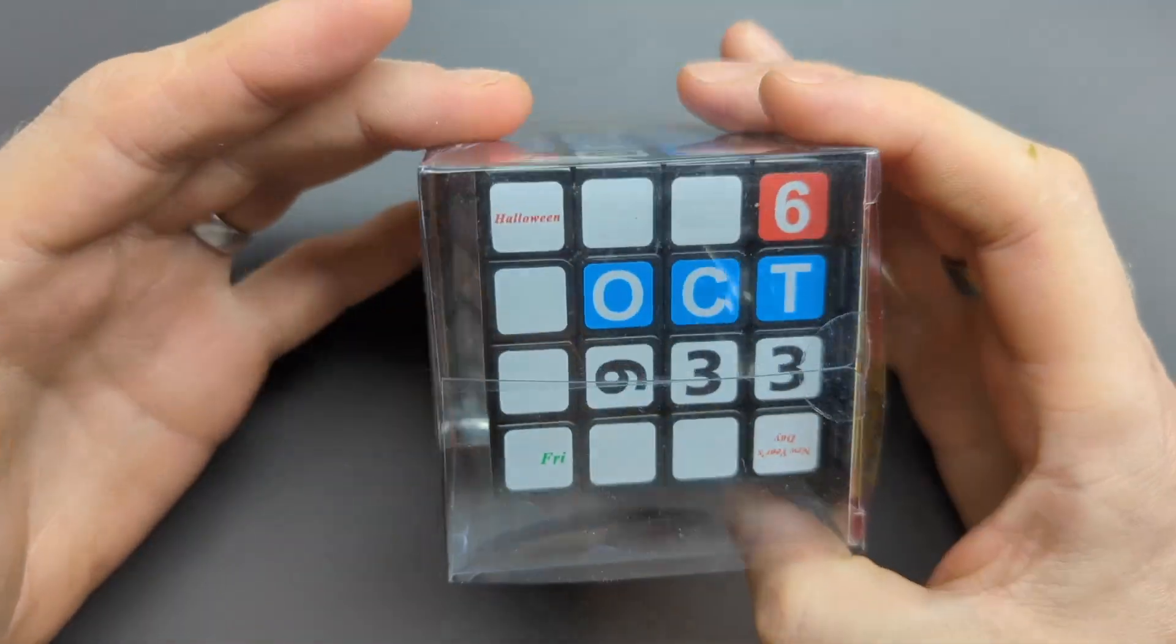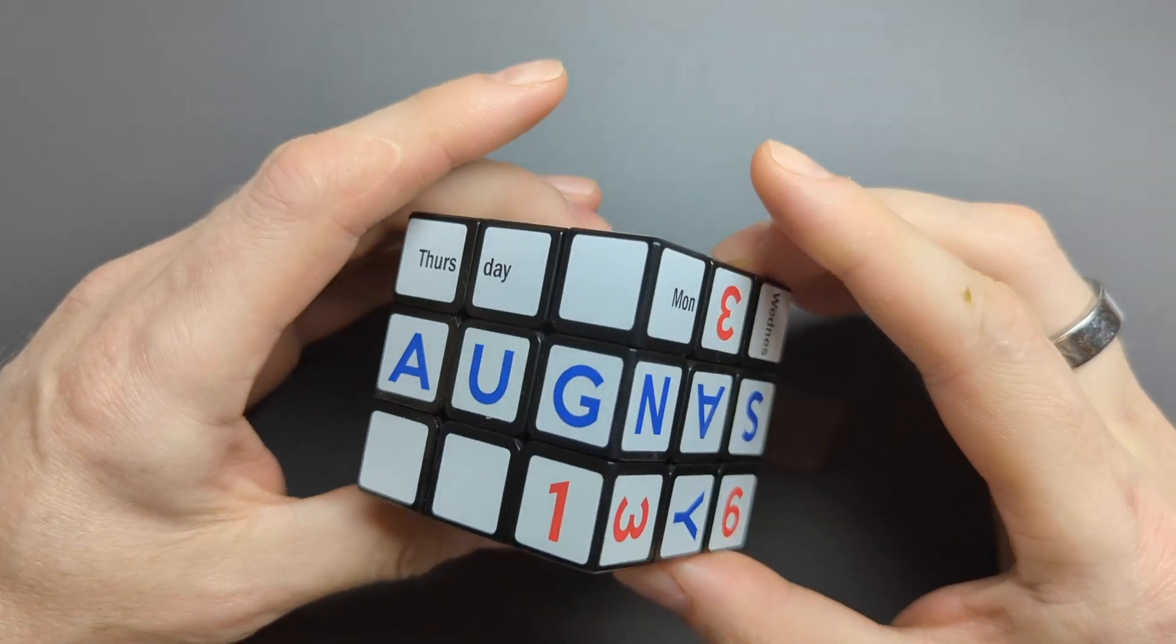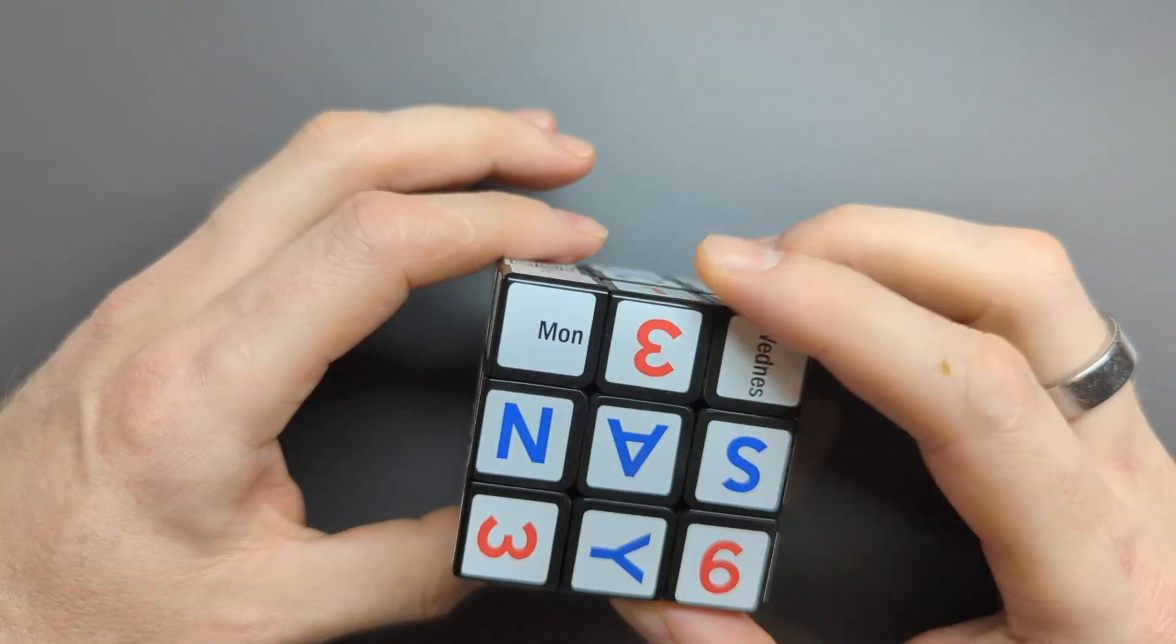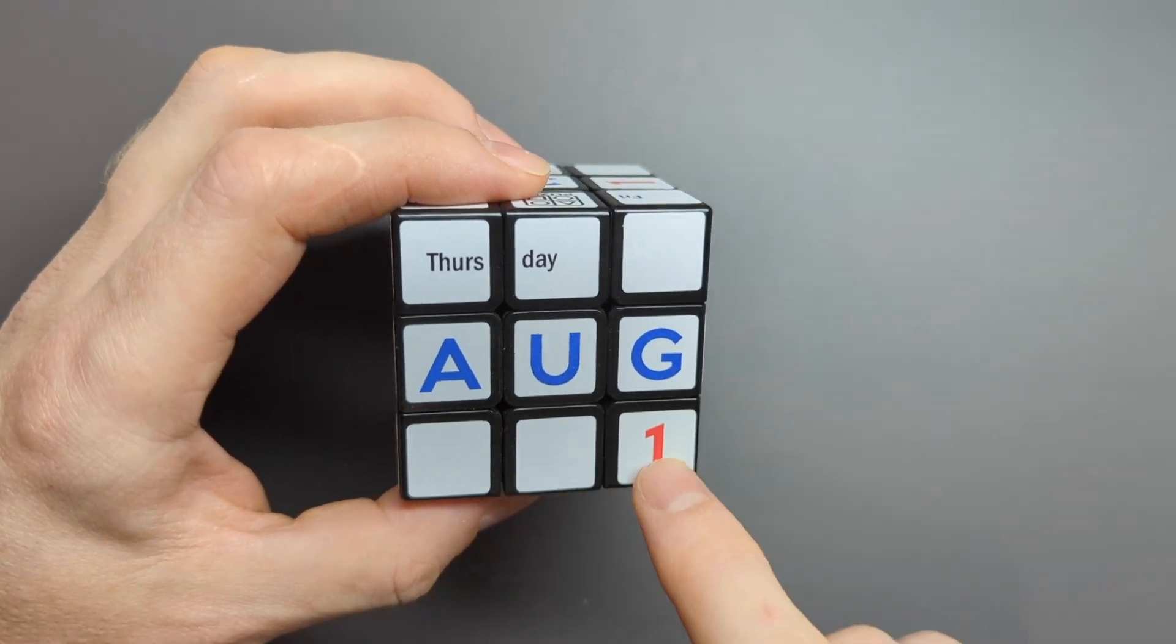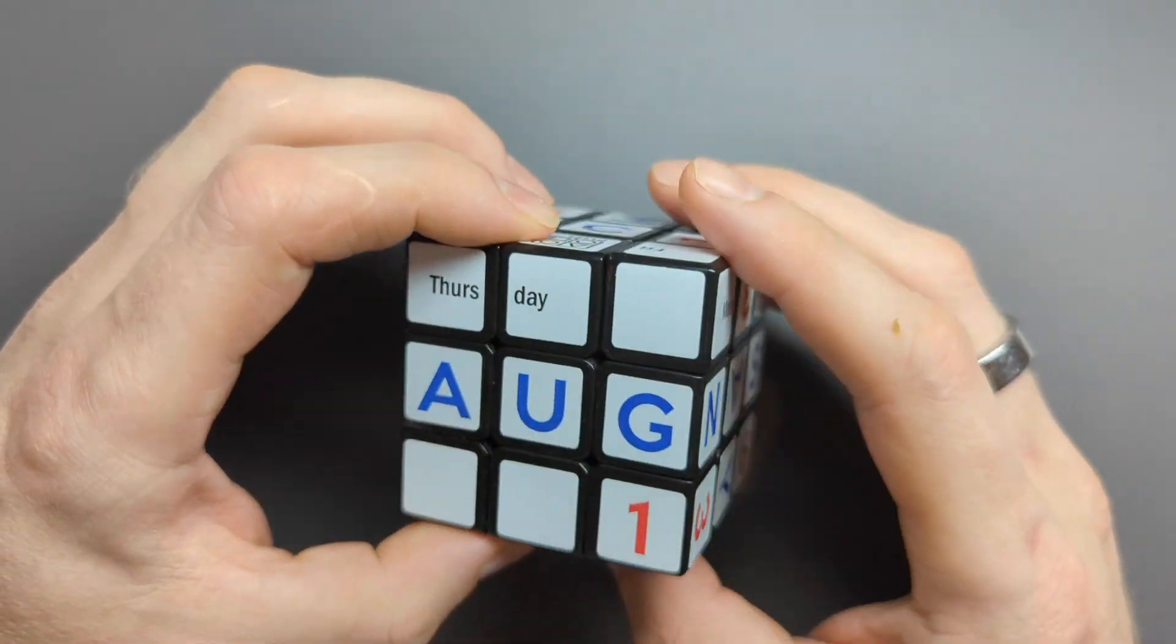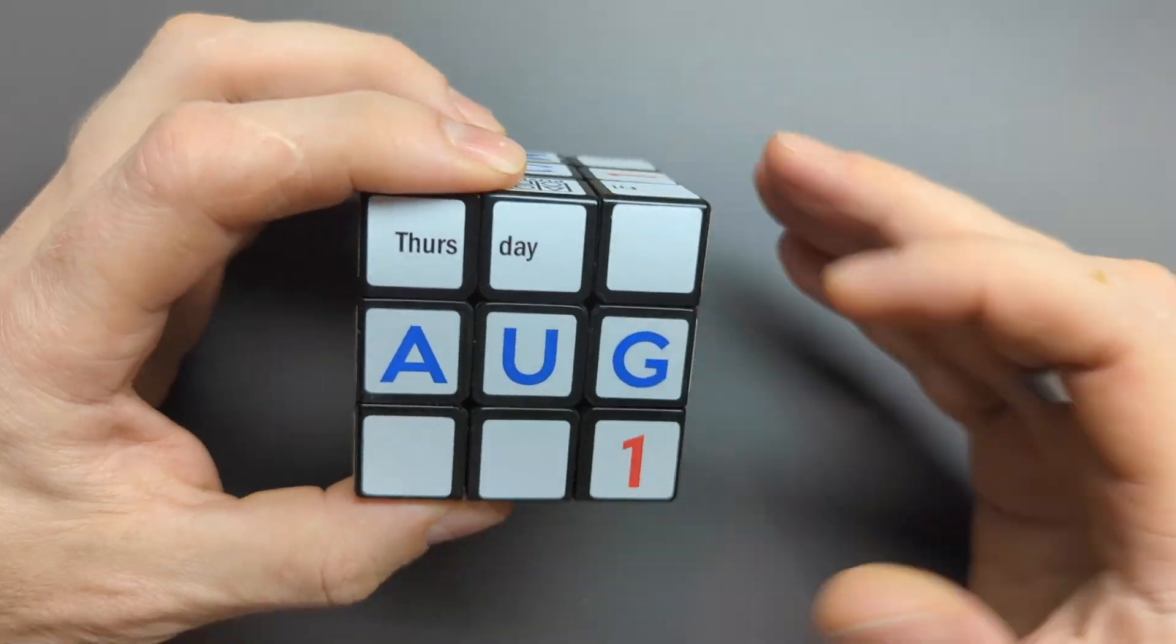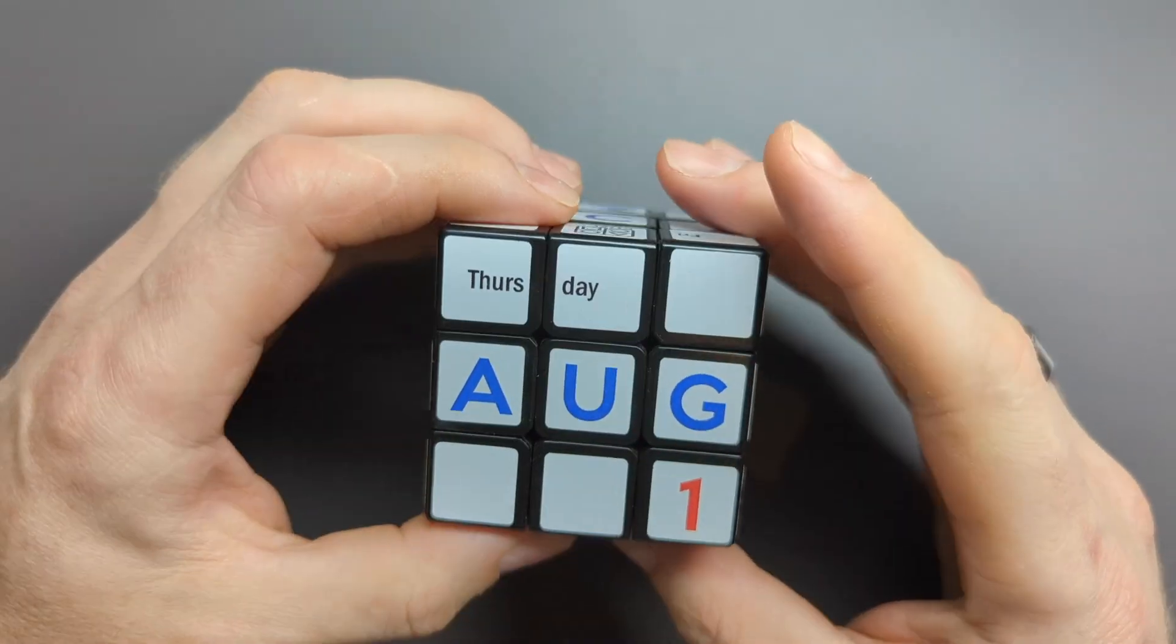So what I have here is a 4x4x4 calendar cube. You may have seen one of these 3x3 calendar cubes—you can show any combination of day, month, and date, and they're quite fun. I have a couple of them, one at work on my desk and one at home as well.